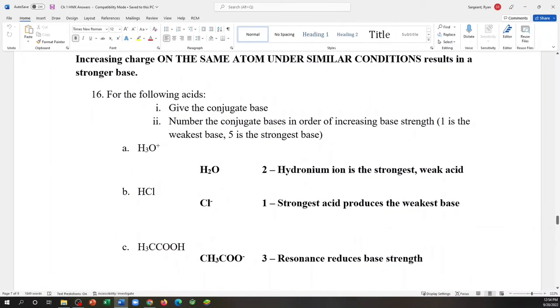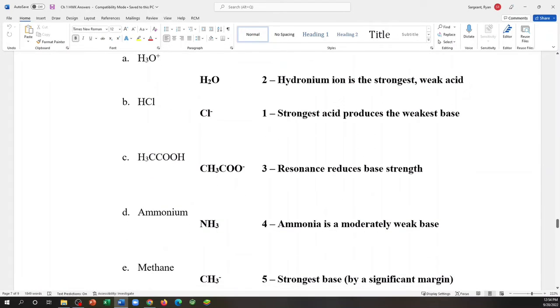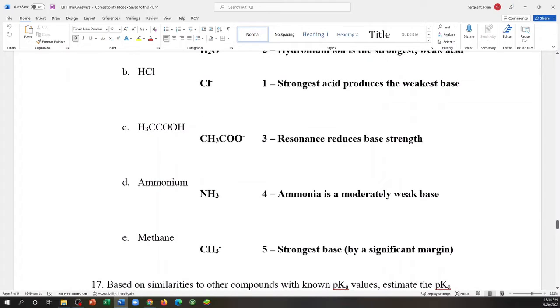Let's go back to question number 16. For the following acids give the conjugate base. So we just take a hydrogen off every time. H3O plus becomes water. HCl becomes Cl minus. Acetic acid becomes acetate. Ammonium, which is NH4 plus, becomes NH3. And methane becomes whatever this thing is called. I forget. CH3 minus. It's really hard to make. So that's why I don't know the name of it.